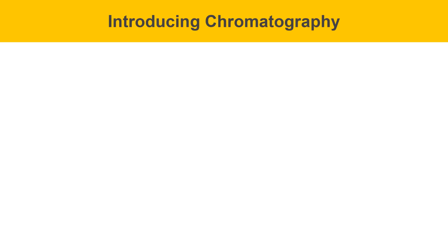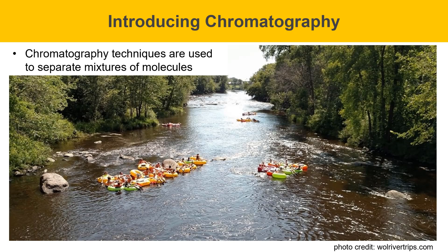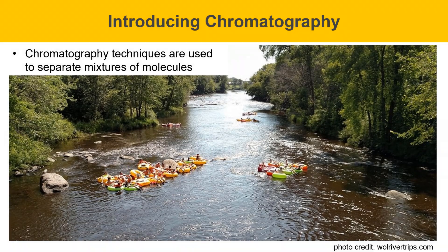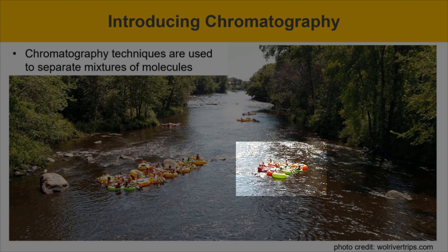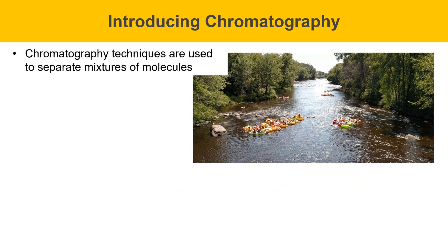Chromatography is a family of techniques used to separate mixtures of molecules. To understand chromatography, think of the way these tubes are floating down a rocky river. The tubes get pulled downstream by the flowing water and bump into rocks along the way that slows their progress. The tubes move down the river at different rates based on the way they interact with the rocks. Some tubes get held back more and progress more slowly — for example, a big clump of tubes against a rock will move much slower than another clump. If you imagine the tubes are like molecules, this gives you a sense of how chromatography works.